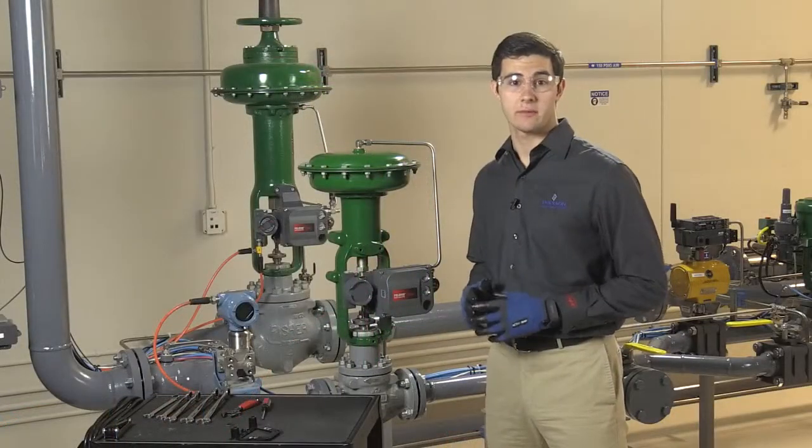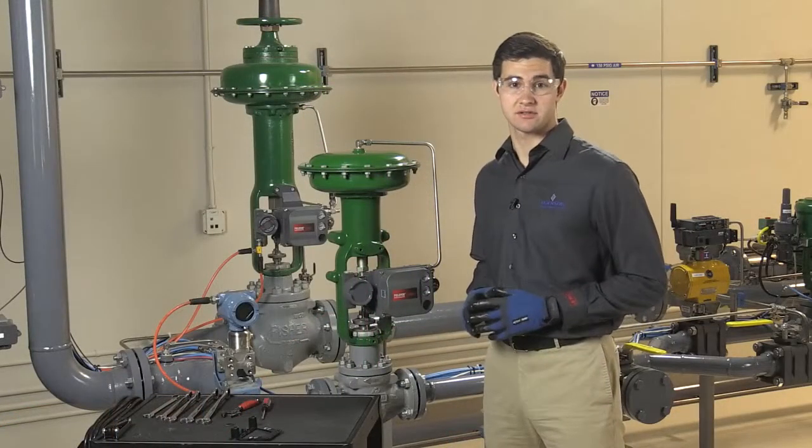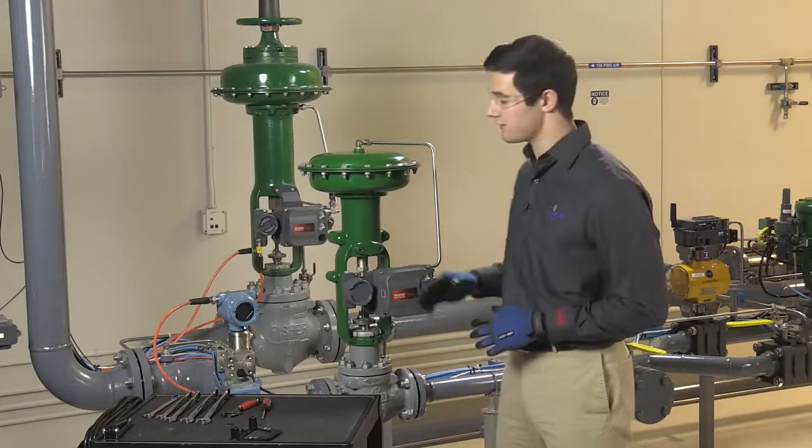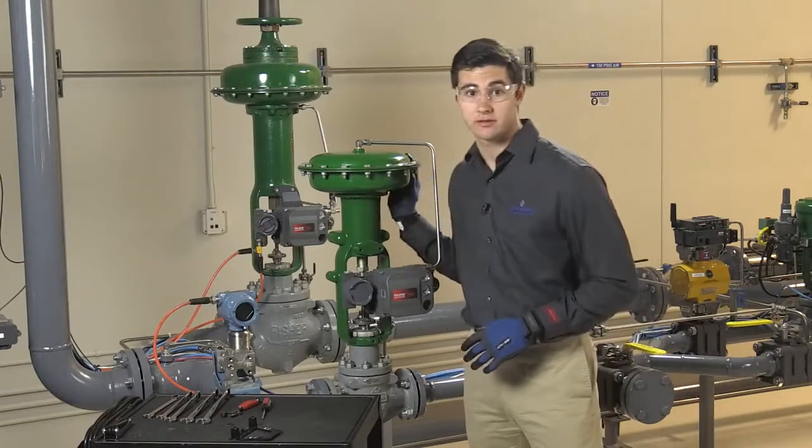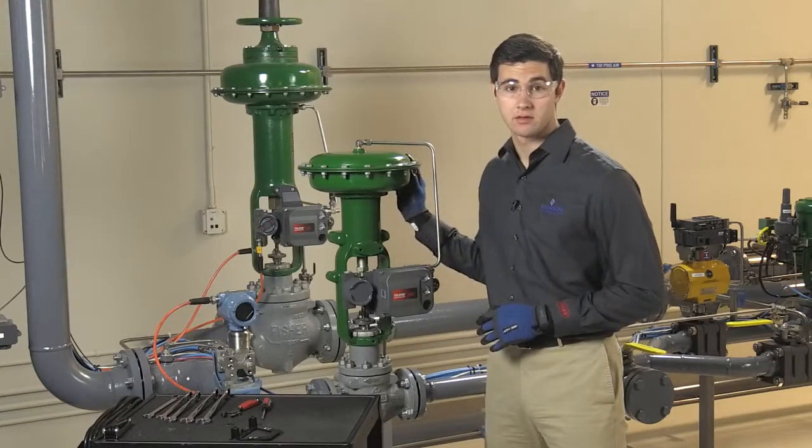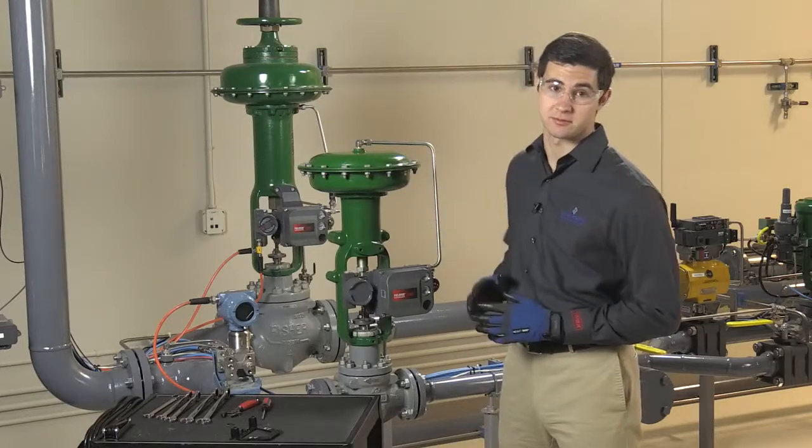We've now learned how to mount a FieldView DVC 6200 to a Fisher type 657 size 40i actuator using its integrated mounting pad. So, let's review this procedure.